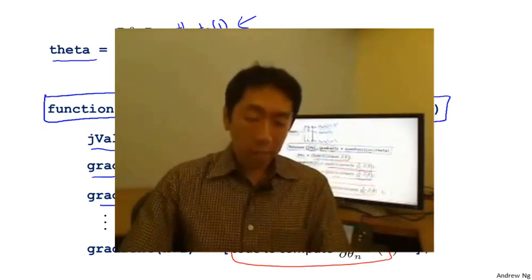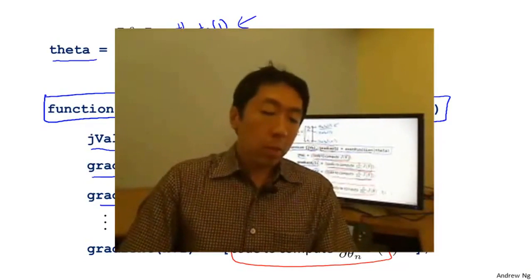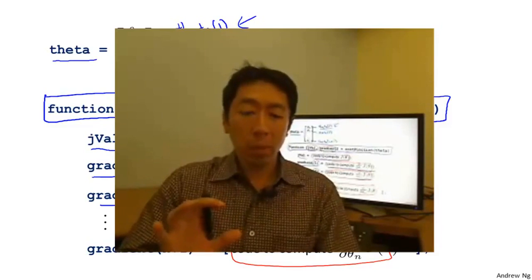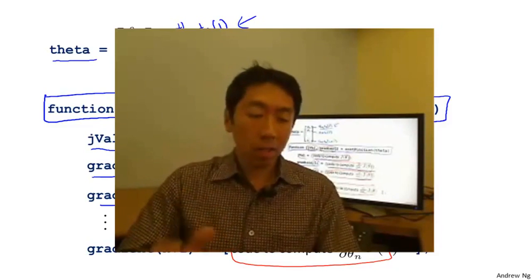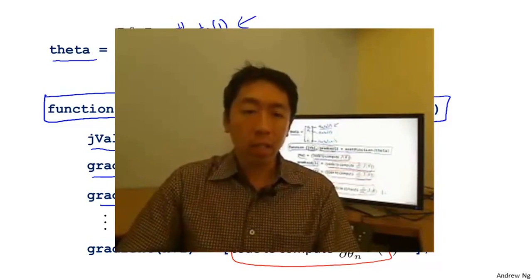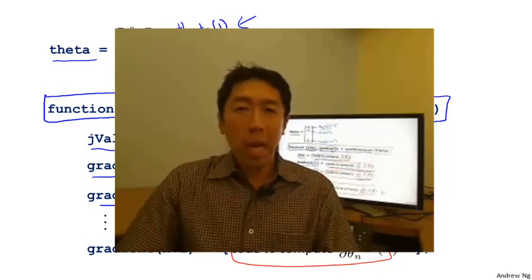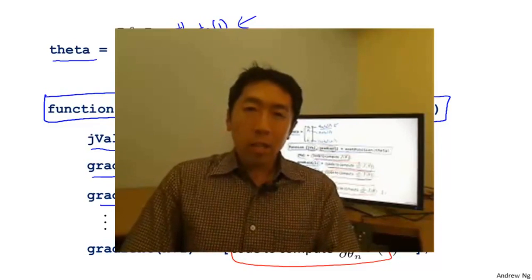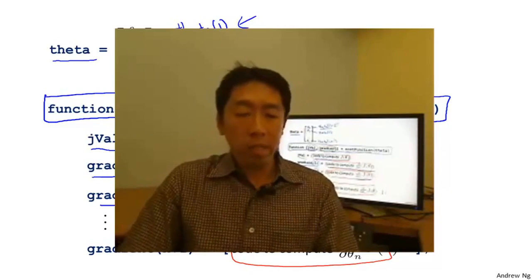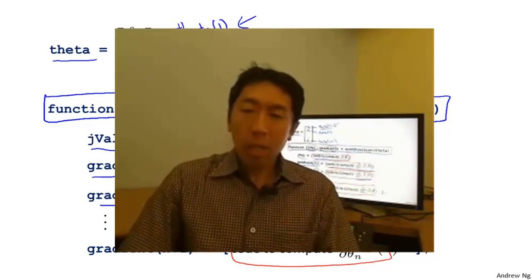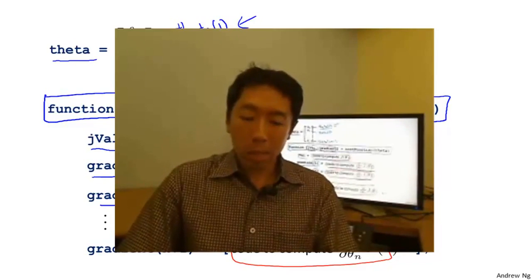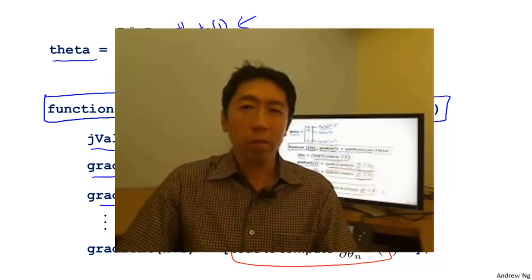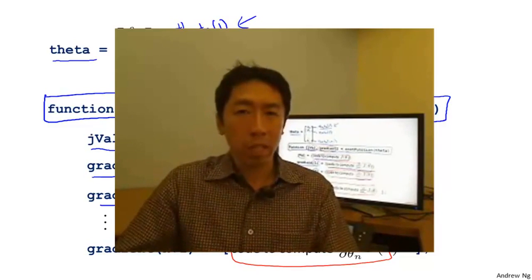So now you know how to use these advanced optimization algorithms. Because you're using a sophisticated optimization library, it makes the code just a little bit more opaque and perhaps harder to debug. But because these algorithms often run much faster than gradient descent, whenever I have a large machine learning problem I will use these algorithms instead. With these ideas, hopefully you'll be able to get logistic regression and also linear regression to work on much larger problems. In the next and final video on logistic regression, I want to tell you how to take logistic regression and make it work on multi-class classification problems.